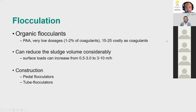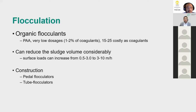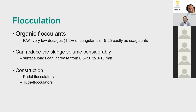Returning to the slides, the professor explains that the video showed how jar testing is done in the laboratory. Different versions exist; in the standard version, chemicals are added to a one-liter beaker, mixed, and then the flocs are observed growing. Afterward, the supernatant is taken and dosages are compared to determine which is best, and that dosage is communicated to the plant.